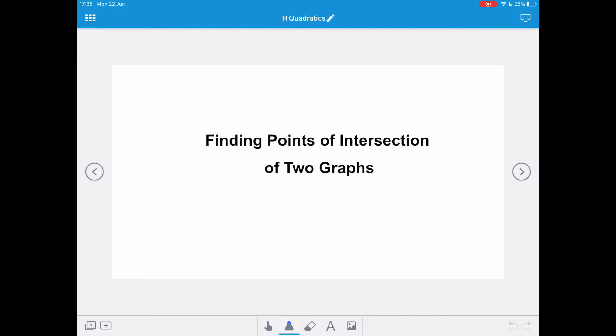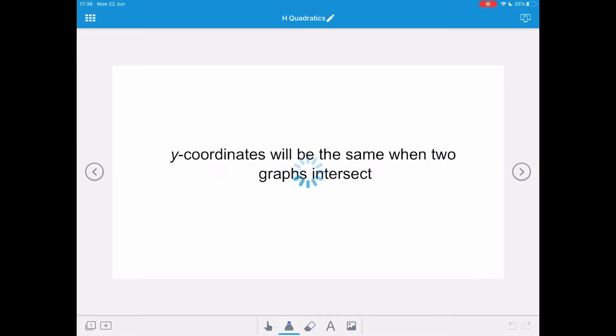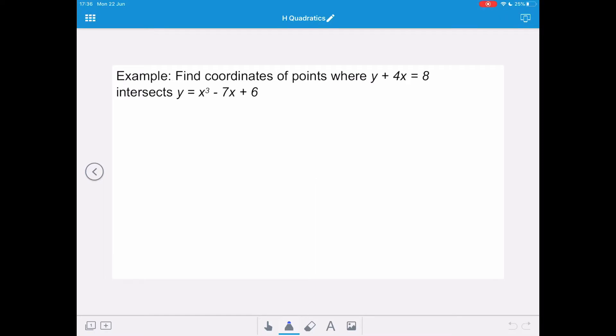So what if we want to find the actual points of intersection of two graphs? Well, we know that the y-coordinates will be the same when two graphs intersect. So for this example, we want to find the coordinates of points where y plus 4x equals 8 intersects y equals x cubed minus 7x plus 6.